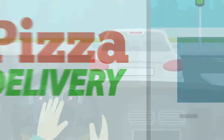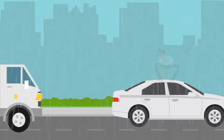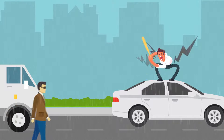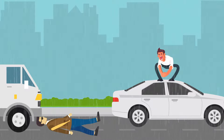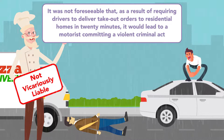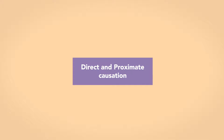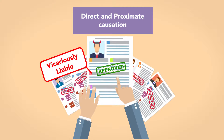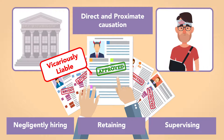Now, assume the same facts, but instead of driving through a stop sign, the driver, during a rainstorm, accidentally strikes the back of a motorist's car at 10 miles per hour because the vehicle briefly hydroplanes. The motorist exits the car enraged, grabs a baseball bat, and strikes the driver's windshield. A person walking across the street witnesses the incident and attempts to intervene and calm the motorist. In response, the motorist strikes the person with the baseball bat. Here, the employer will not be liable because it was not foreseeable that requiring drivers to deliver takeout orders in 20 minutes would lead to a motorist committing a violent criminal act. Direct and proximate causation are also relevant in situations where the employer faces vicarious liability for negligently hiring, retaining, or supervising an employee, where courts will inquire whether the injuries were a reasonably foreseeable result of the employer's negligence.